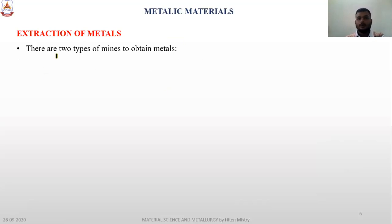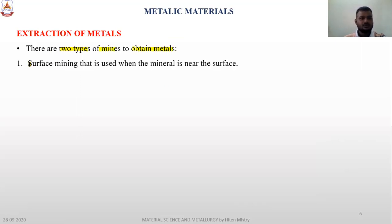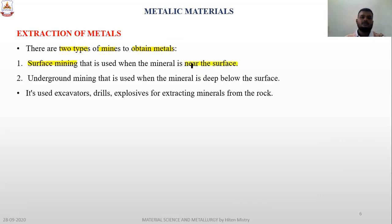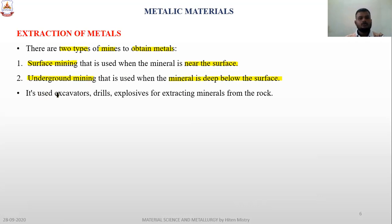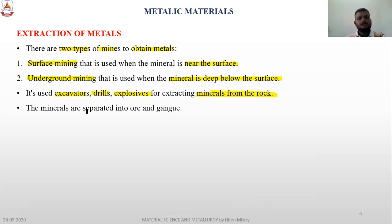Extraction of metals: there are two types of mining used to obtain metals. First is surface mining, used when the mineral is near the surface. Second is underground mining, which uses excavators, drills, and explosives for extracting minerals from rocks. The minerals are then separated into ores and gangue.